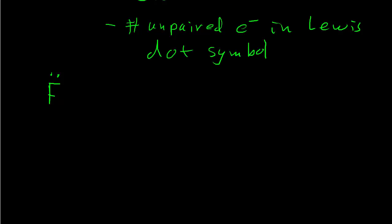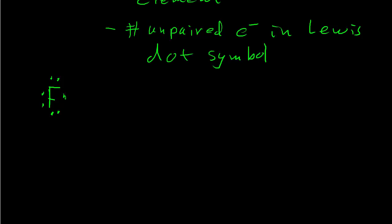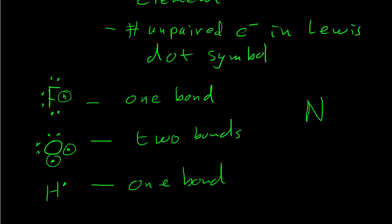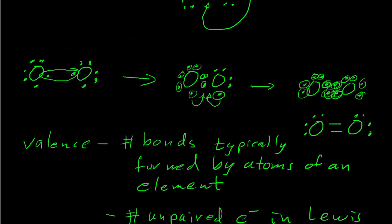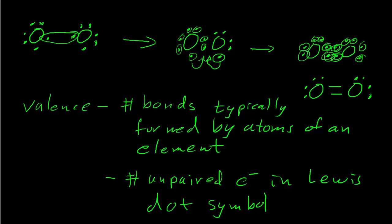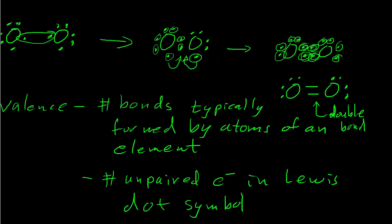For example, the Lewis dot symbol for fluorine has seven dots, but only one is unpaired, so fluorine will typically form one bond. Oxygen has two unpaired electrons, so it typically forms two bonds. Hydrogen has a single unpaired electron and typically forms one bond. Nitrogen has three unpaired electrons and typically forms three bonds. Checking against our examples: fluorine shows a single bond — one line, one shared pair — and oxygen shows a double bond, which counts as two bonds, consistent with oxygen's typical valence of two.